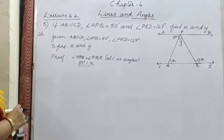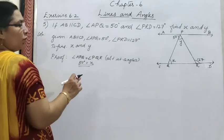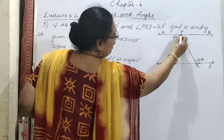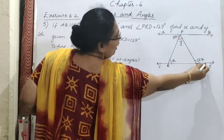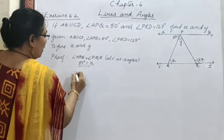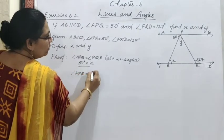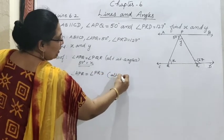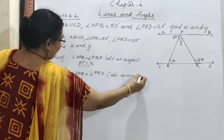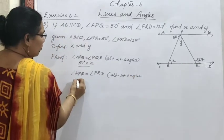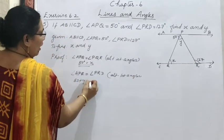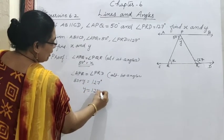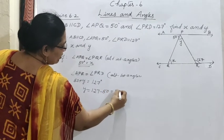Now y is required. We take angle APR and angle PRD. Angle APR equal to angle PRD — again by alternate interior angles. Angle APR is 50 plus y, and angle PRD is 127. So 127 minus 50 gives y equal to 77°.